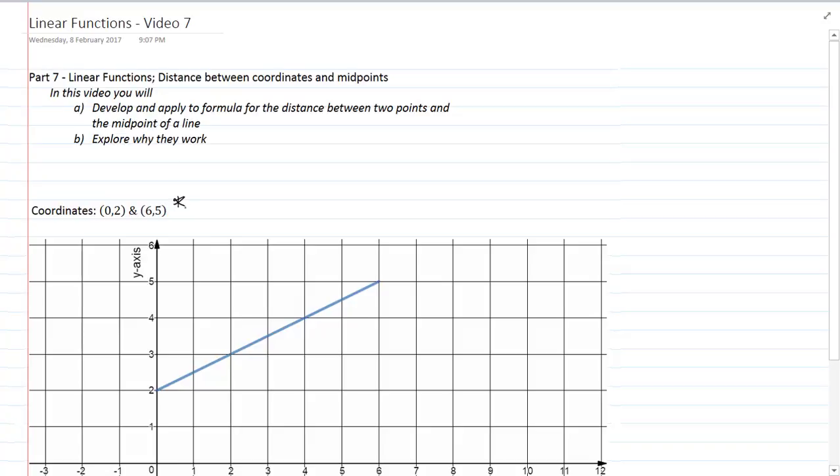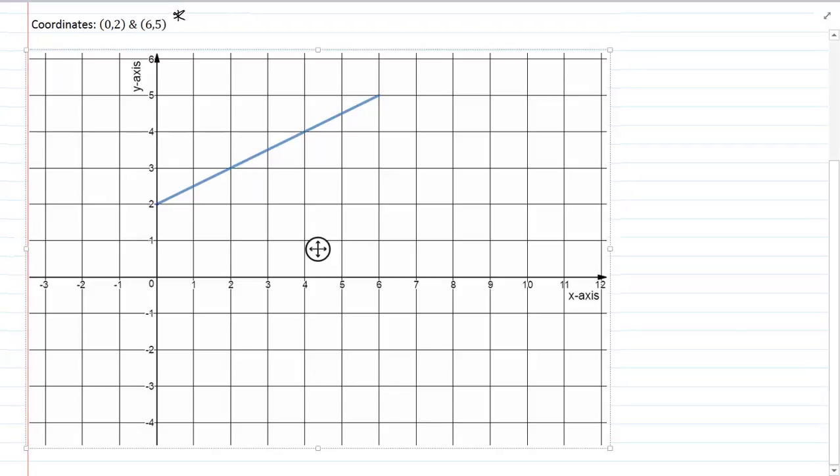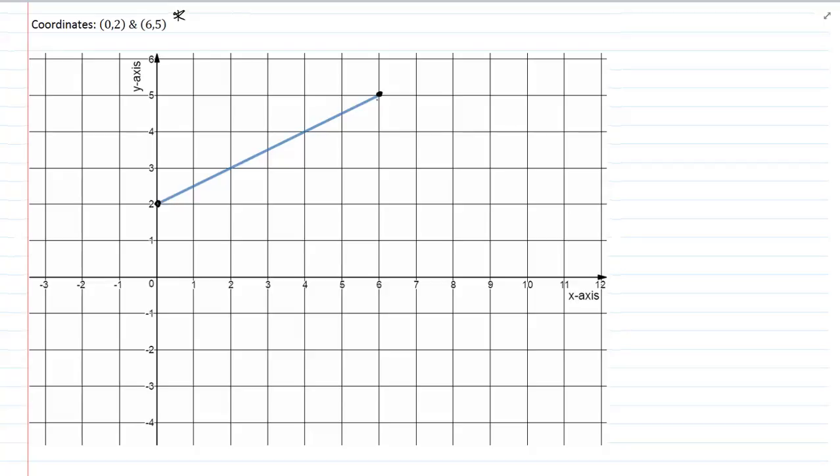Of course you can take it from there. So let's start with the example listed just here. So in this example I'm giving you two coordinates, 0,2 and 6,5. Here's 0,2 and here's 6,5. And the blue line represents the line segment that connects 0,2 and 6,5, the coordinates.